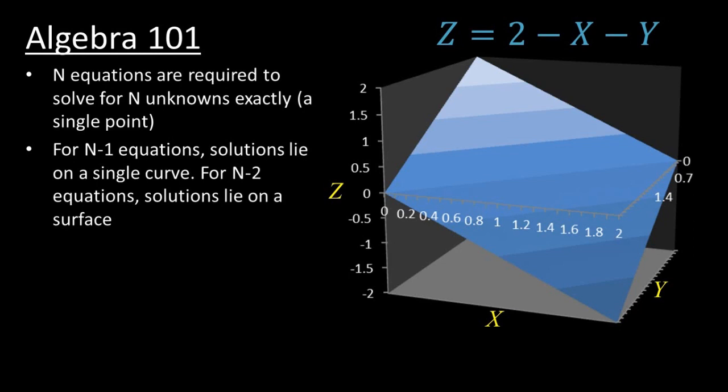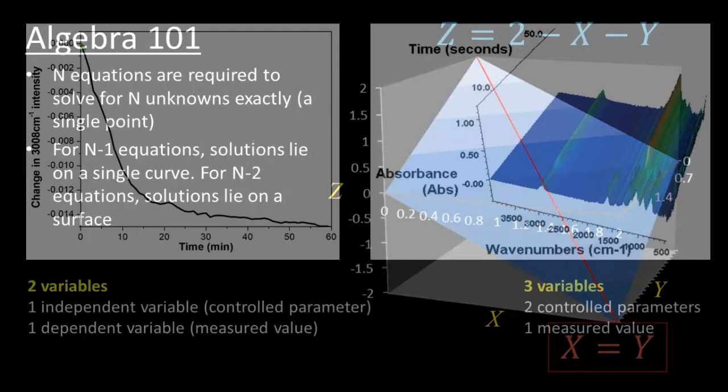Thinking back to grade school math, you might remember that if you have a number of unknown variables related to each other by equations, each additional independent equation reduces the dimensionality of the solution set by one. Start out with a single equation with three variables and the solution plots out a 2D surface. Add one equation, and you narrow the solution to a line on that surface.